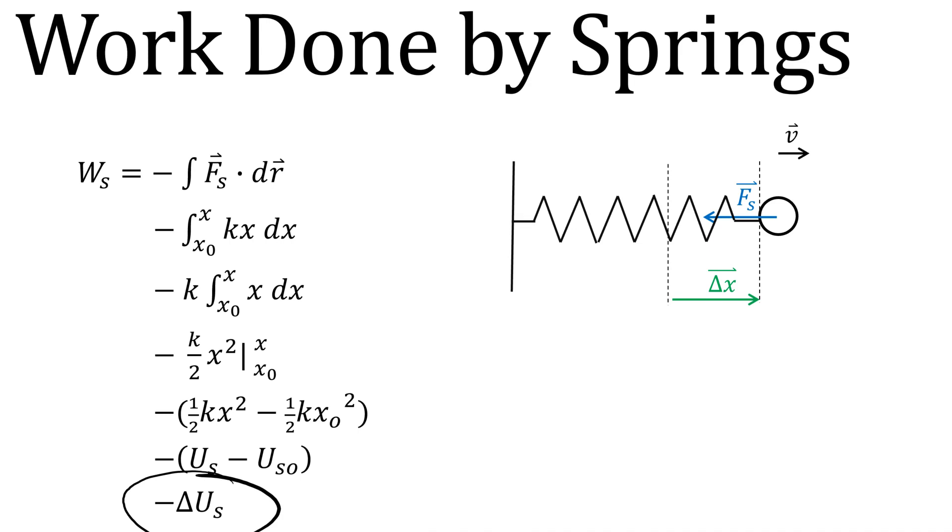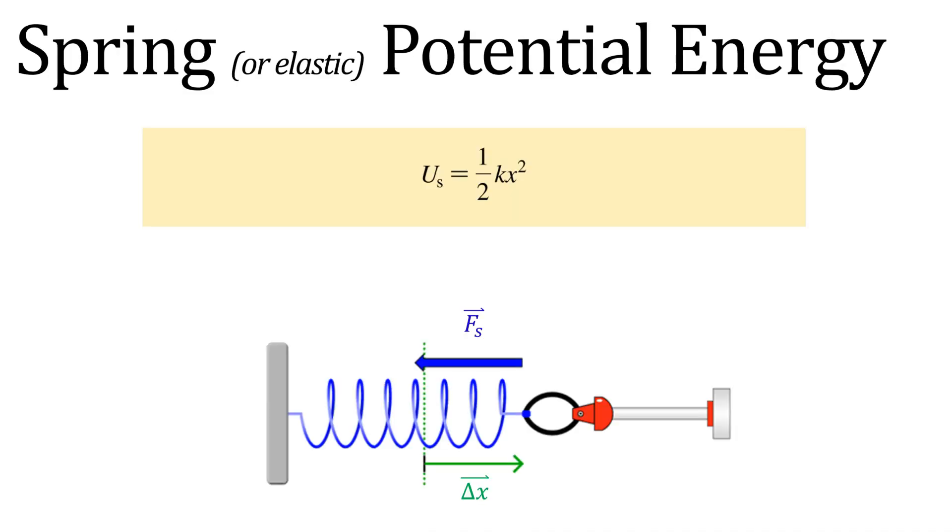All right, so really the goal of this derivation is to show us that we now have a new potential energy that's present in a spring, a spring's elastic potential energy. Remember, we use the word elastic because elastic is a word that describes how able an object is to return to its original shape. Things like springs are elastic because they can stretch and return to their original shape. Things like clay are plastic because they can stretch but they won't return to their original shapes.